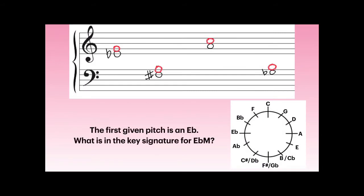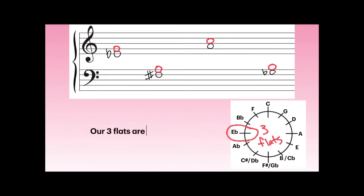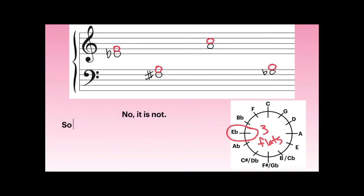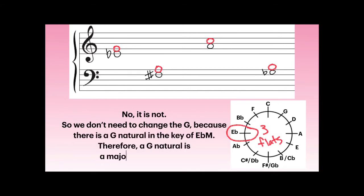The first given pitch is an E-flat. What is in the key signature for E-flat major? Let's find it on our circle of fifths — there are three flats: B-flat, E-flat, and A-flat. Is G on that list of flats? No, it is not. So we don't need to change the G because there is a G natural in the key of E-flat major. E-flat major has B-flat, E-flat, and A-flat — it doesn't have a G-flat or a G-sharp, it has a G natural. Therefore, a G natural is a major third above E-flat.